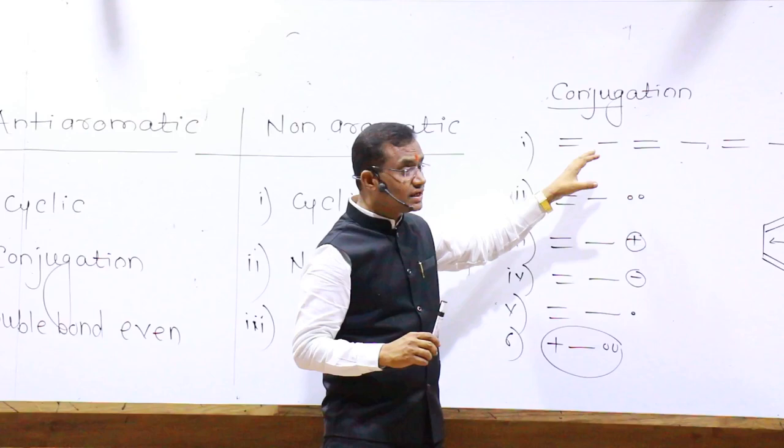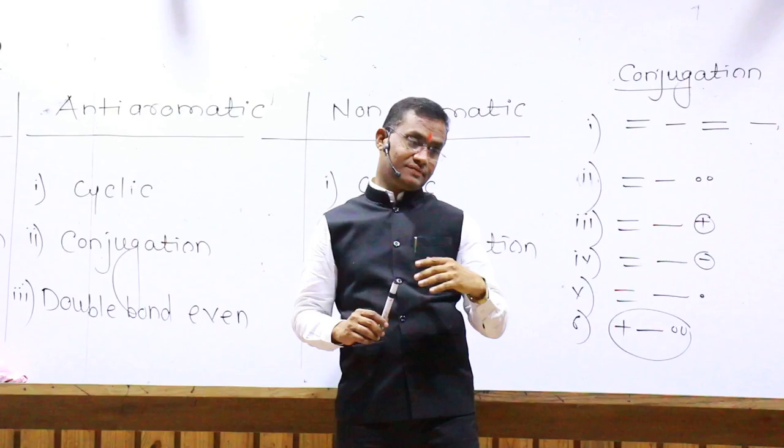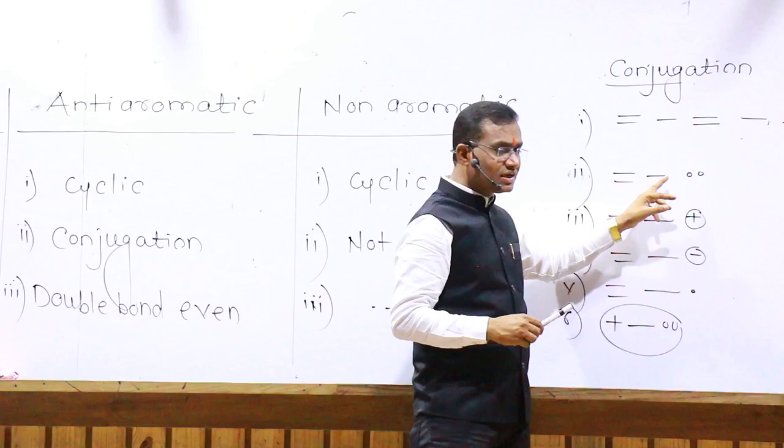Conjugation. What are the conditions of conjugation? Double single, double single, double single. What are the conditions of conjugation? Cyclic compound is conjugation, aromaticity, double single, cyclic.